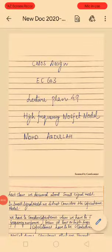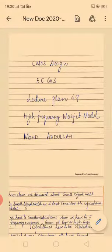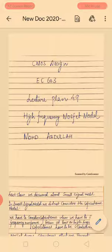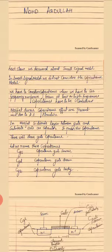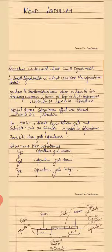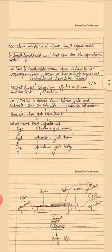Good evening dear students. I am back with a new topic of CMOS design related to the high frequency MOSFET model. In the previous class we discussed the small signal model. In that small signal model we did not consider capacitance — the final circuit diagram included only a current source and a resistive load. That was the small signal model.